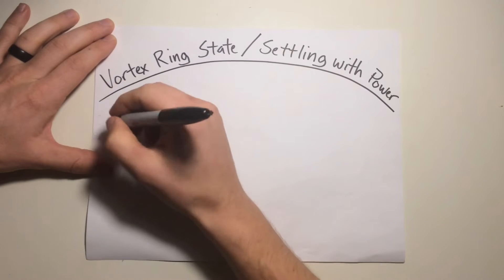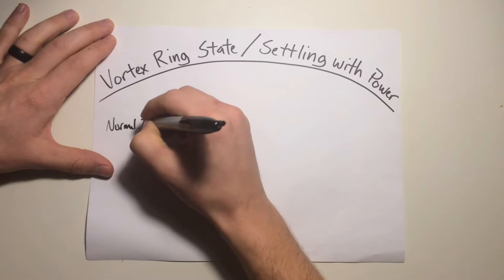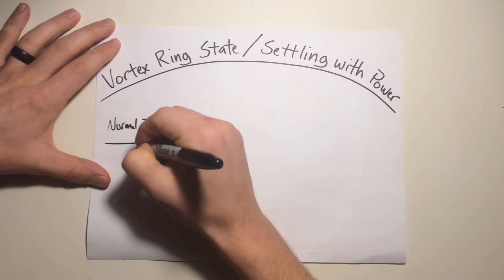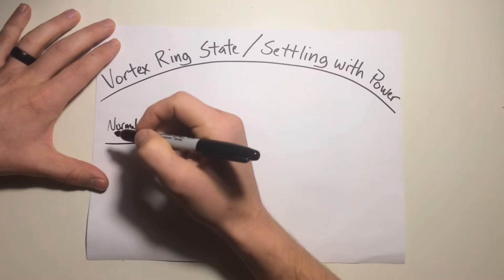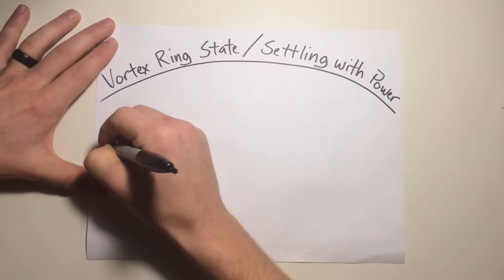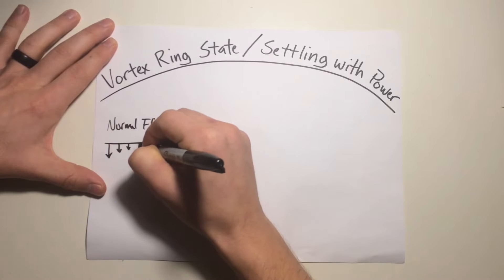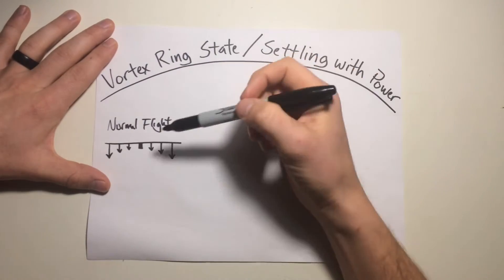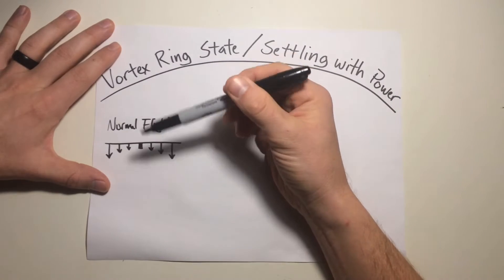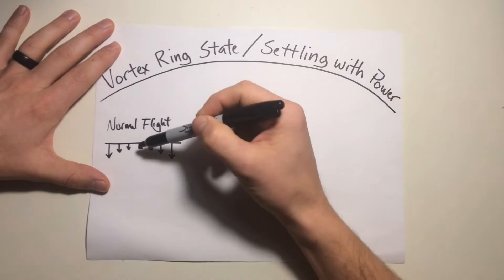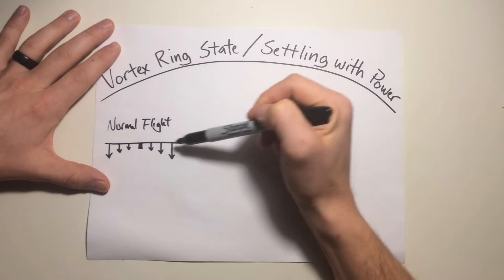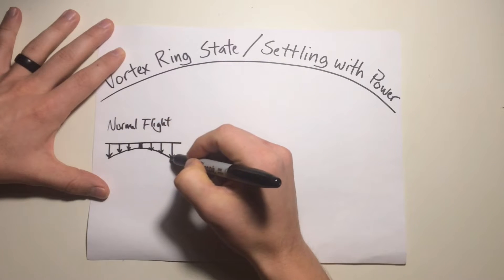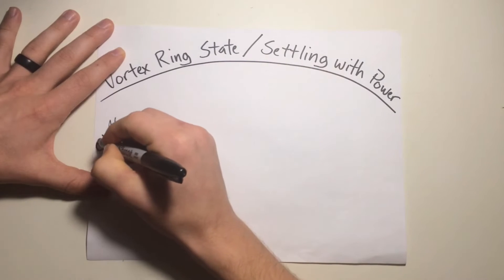Under normal powered flight, let's look at our rotor disc. Here's our mast. The airflow moves downwards through the rotor disc, and this downward flow is more pronounced at the blade tip than at the blade root due to the differences in blade speed — it's turning faster at the blade tip than at the blade root. We have the pitch angle in the blade, so this causes more downward flow towards the outside of the blade than the inside. On the tips of the rotor blades, we still have our wingtip vortices.